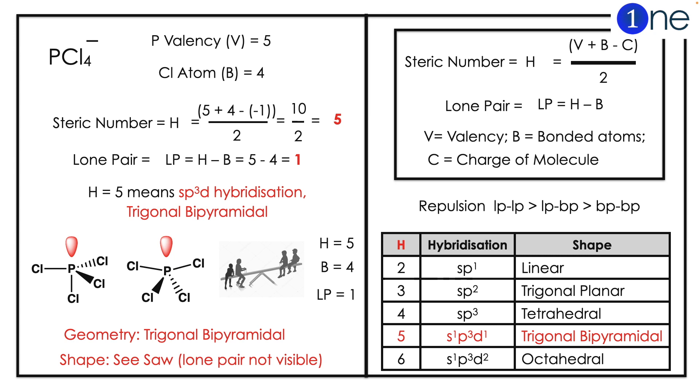So 5 means sp3d hybridization. And lone pair will be 5 minus 4 equals 1. So the hybridization will be sp3d hybridization. The shape is trigonal bipyramidal. One lone pair makes it a seesaw structure because the lone pair is not visible.